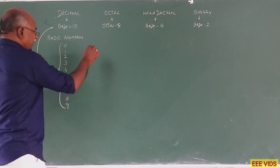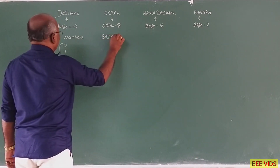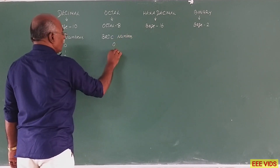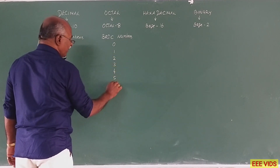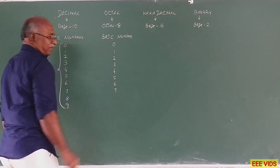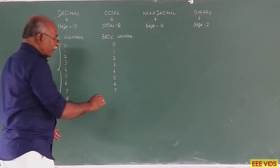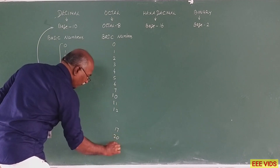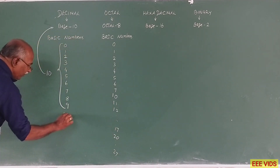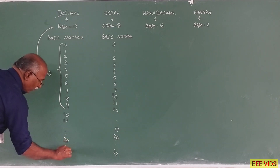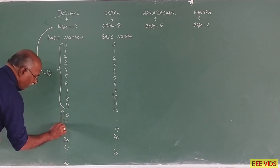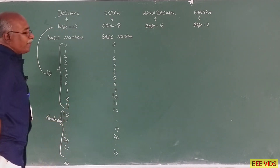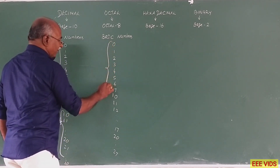Octal — that is the basic number. The basic numbers in octal are 0, 1, 2, 3, 4, 5, 6, 7 — that is all. So 8 in octal is represented as 10, which is a combination number. Then 11, 12, up to 17, then 20, 27, 30 — these are all combination numbers. The basic digits are 0 to 7, so this is base 8.